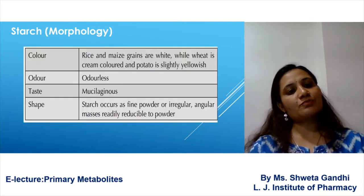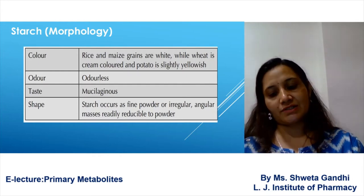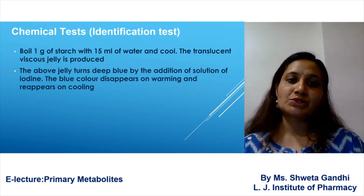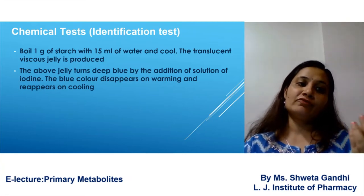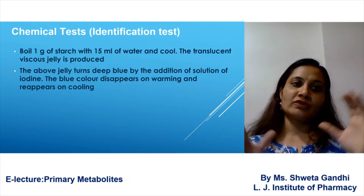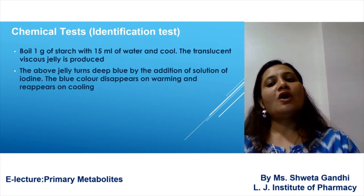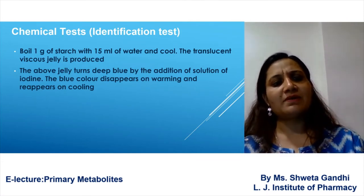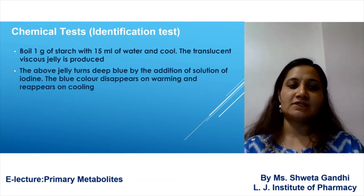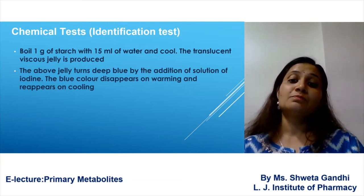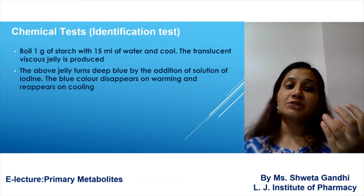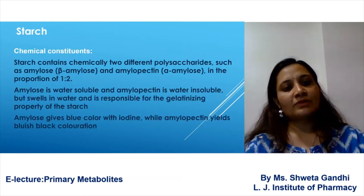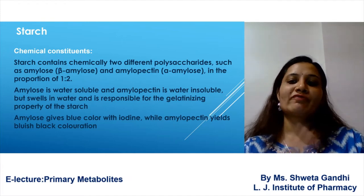The morphology of starch — color, odor, taste, and shape — must be studied. For the chemical test: if you boil one gram of starch with 12 to 15 ml of water, a translucent viscous jelly is formed. This jelly will turn blue in color on addition of iodine. This is the chemical test for starch.